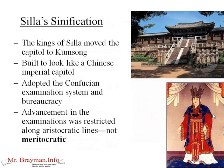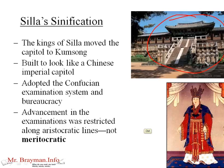Silla itself went through a period of intensive Sinification. They moved the capital to Kumsong and built it to really look like a Chinese imperial capital — here's a picture and it very much looks like the Forbidden City in Beijing, though some slight differences in stonework, stairs, and surrounding trees reveal it's not Chinese, but the architecture itself is distinctively Chinese. Silla adopted the Confucian examination system and bureaucracy, although not quite to the level of meritocracy that the Chinese had. The Koreans tended to be more aristocratic — really only the sons of great aristocratic families would take these exams and enter the bureaucracy.